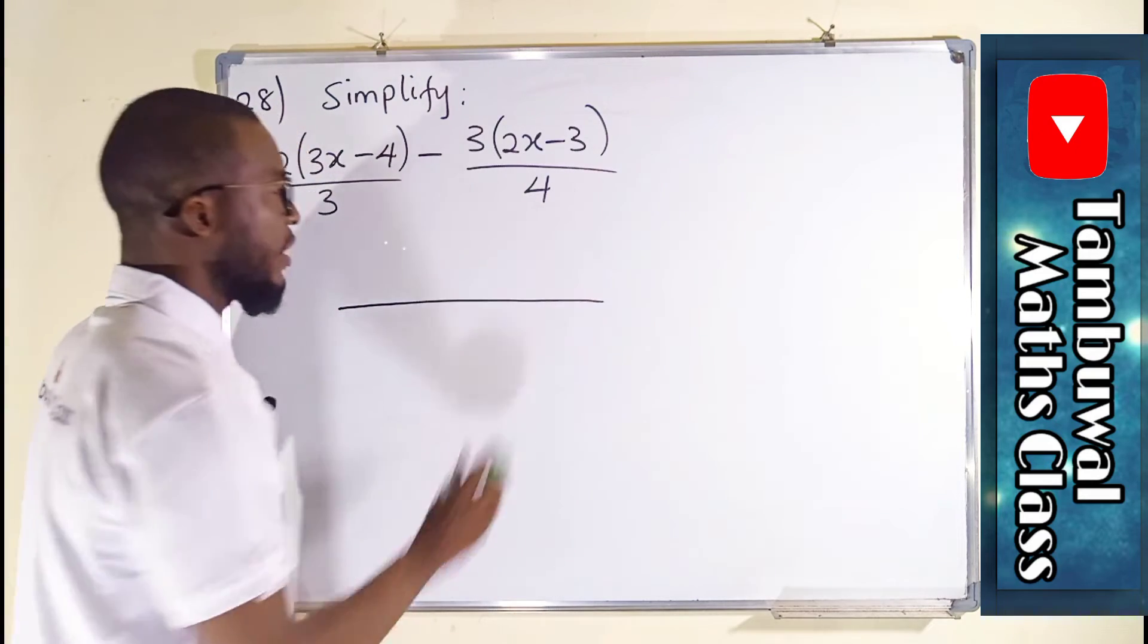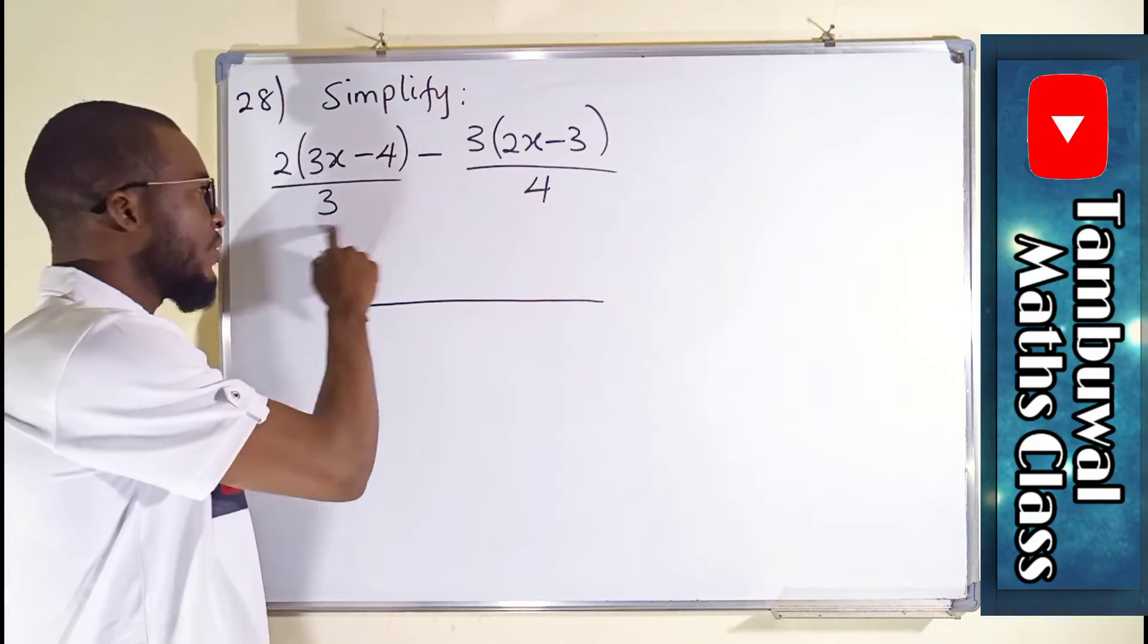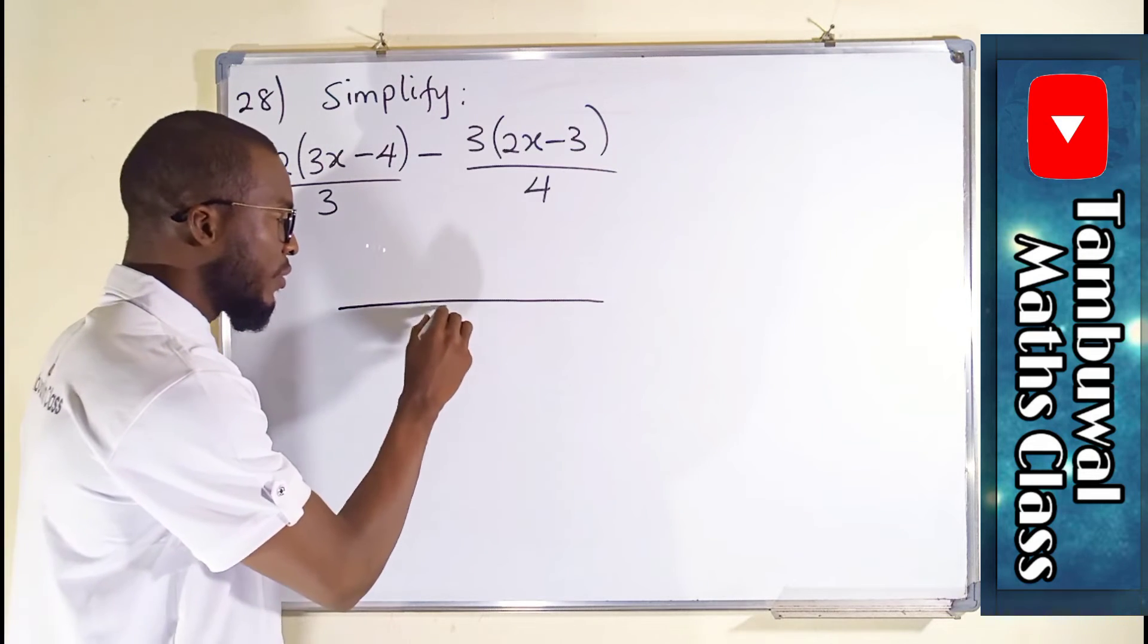Just draw a straight line. Find the LCM of the denominators, the smallest number which 3 and 4 can go into simultaneously without remainder, and that number is 12.